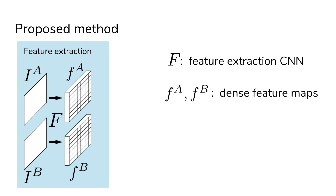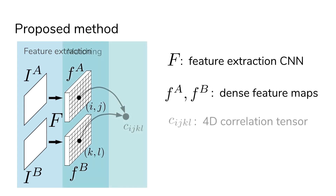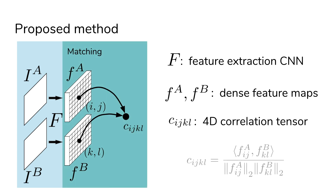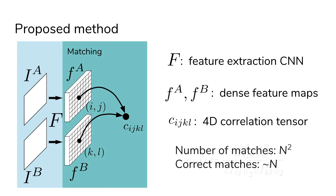We employ a fully convolutional neural network to obtain dense feature maps for each of the input images. Then, for every pair of features, a similarity score is computed and stored in a four-dimensional tensor.